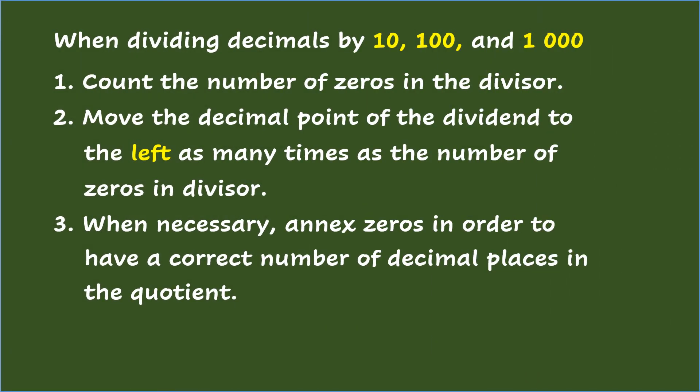When dividing decimals by ten, one hundred, and one thousand, count the number of zeros in the divisor. Move the decimal point of the dividend to the left as many times as the number of zeros in the divisor. When necessary, annex zeros in order to have a correct number of decimal places in the quotient.